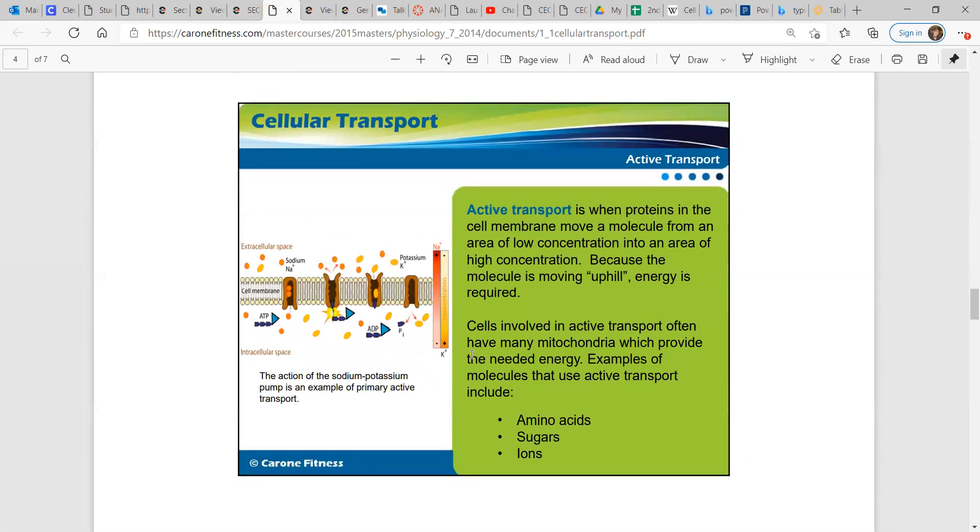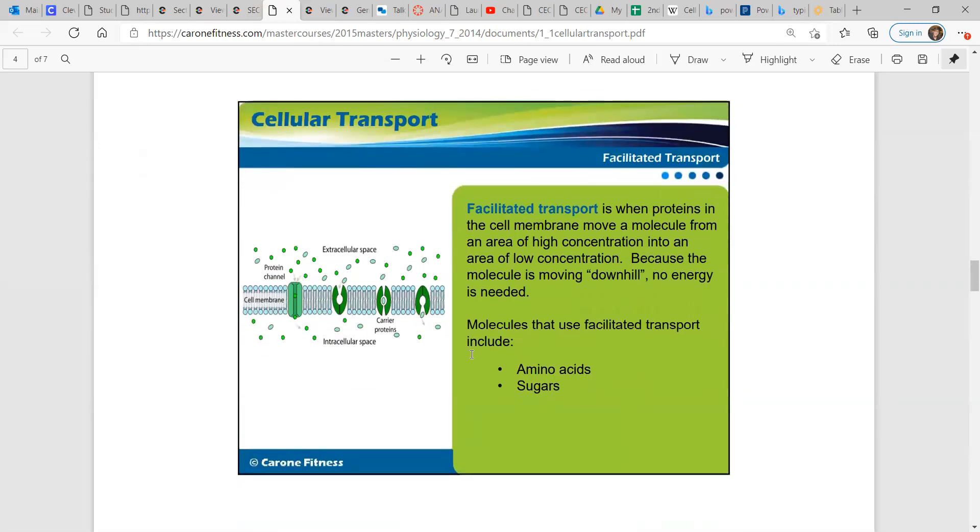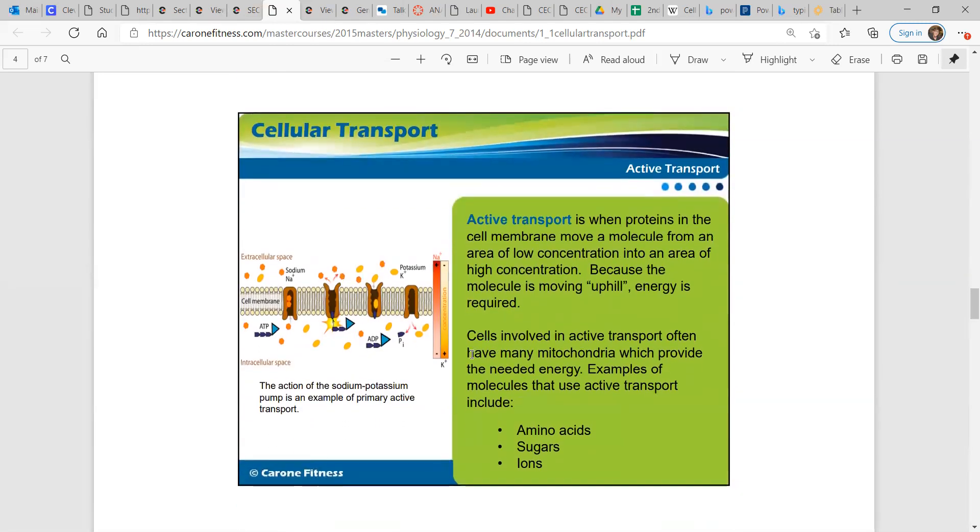Active transport is when proteins in the cell membrane move a molecule from an area of low concentration into an area of high concentration. Because the molecule is moving uphill, energy is required. Whereas facilitated transport kind of just happens on its own, this requires energy. Cells involved in active transport often have many mitochondria which provide the needed energy because they are the powerhouse of the cell.